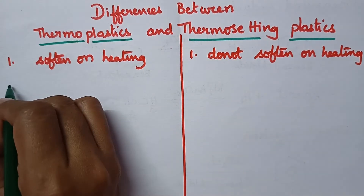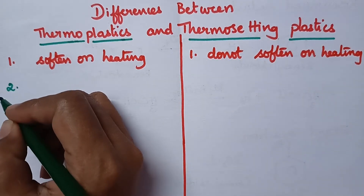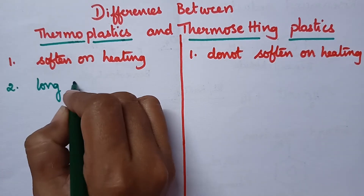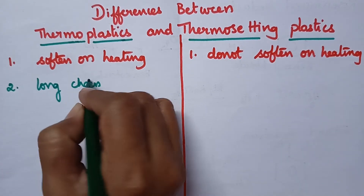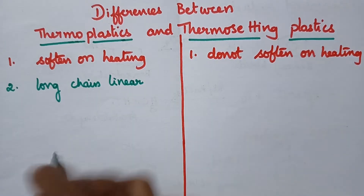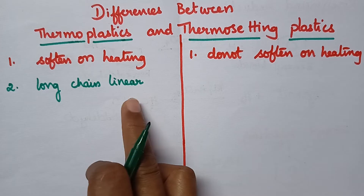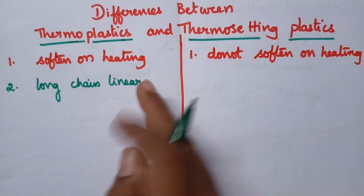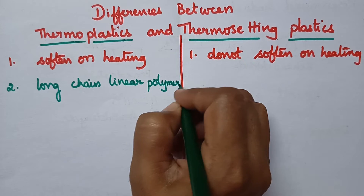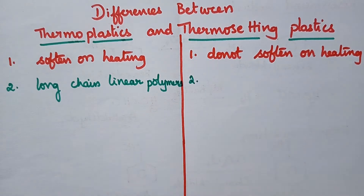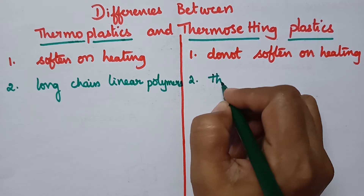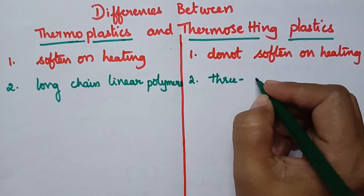Generally when we consider thermoplastics, they consist of long chain linear polymers. Whereas thermosetting plastics consist of three dimensional network polymers.